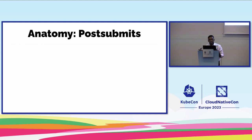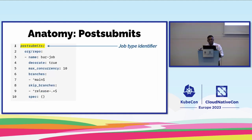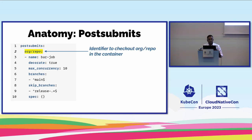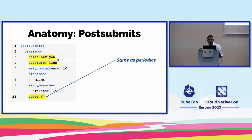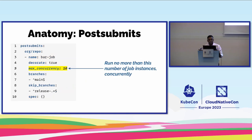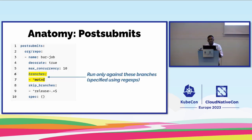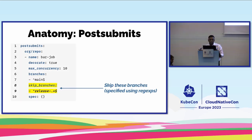Moving on to post-submits: the job type identifier tells us it's a post-submit job. Here's our org and repo on which it would run. The name, decorate, and spec are the same as periodics. Max concurrency lets us set the number of jobs we want running concurrently — up to 10 or whatever we specify. Branches is a regular expression we can set to choose which branch to run this job against. Skip branches is the opposite — for example, a regex to skip any release-dash-whatever branches.